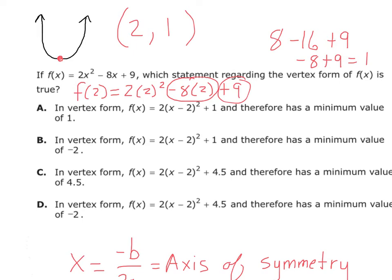Our function is not going to have a max — it is going to have a minimum. You can see all the answer choices say 'therefore it has a minimum.' Your minimum is always how high or low the graph is. So which of these numbers, 2 or 1, tells you how high or low it is? The 1 does — it tells you to go up 1. So we have a minimum value of 1, and the answer is A.